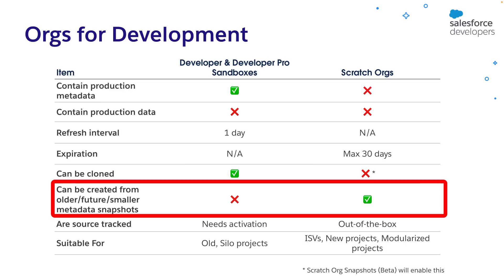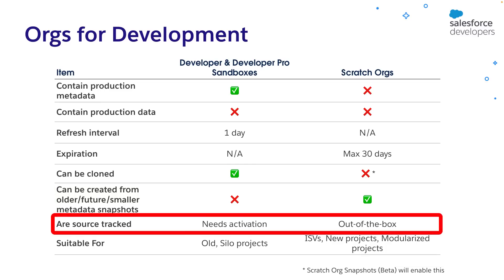A possible strategy is to divide your metadata into smaller packages and deploy them independently. We'll talk about package development in another video of this series. Scratch orgs also have out-of-the-box source tracking capabilities. With source tracking, the Salesforce CLI can detect what's changed in your org and in your local environment. Not having to keep track of the changes yourself makes development much easier. Bear in mind, source tracking is not exclusive to scratch orgs — you can activate it in sandboxes too.